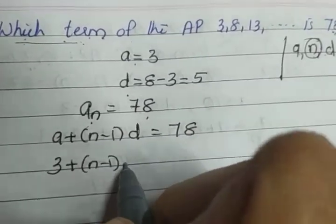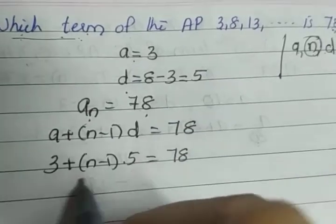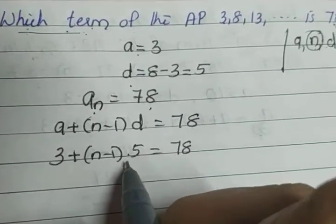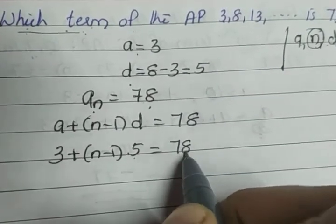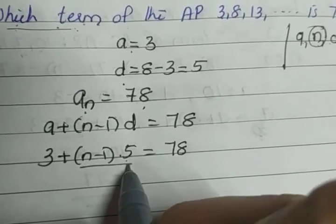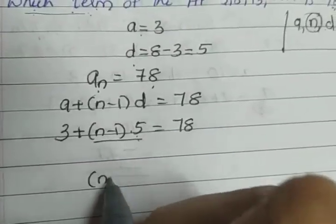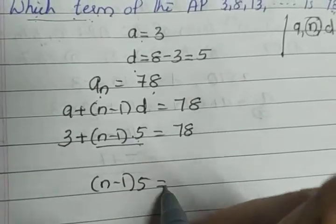What does a equal? a is 3 plus n is unknown, so n minus 1 into d is 5 is equal to 78. When an equation comes like this, don't try to take this 5 to the right side first, because this is a single term. What you have to do is take 3 to the right side. So what we will get is n minus 1 into 5 is equal to 78 minus 3, which gives you 75.